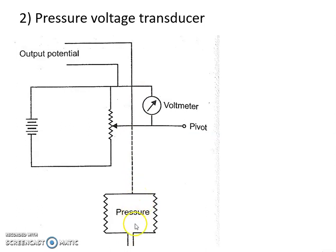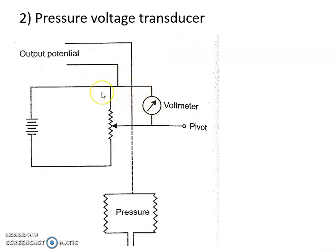When pressure is applied to the bellows, it moves the slider across the resistance, and because of this the resistance of the potentiometer changes. Due to this change in resistance, the output voltage across the potentiometer also changes, and this change in the output voltage is measured, which gives the value of input pressure. As more pressure is applied to the slider, there will be a greater change in resistance, and consequently a larger change in the output voltage. In this way, the potentiometer measures the applied pressure in terms of change in output voltage.